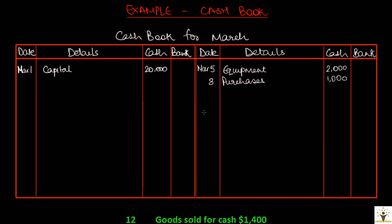Goods were sold for cash, $1,400. In this transaction, business is receiving cash. So go to the debit side of cashbook. March 12, details will be sales and $1,400 in the cash column. So this is how you record some of the simple transactions in the cashbook. Let us now discuss about some special transactions.